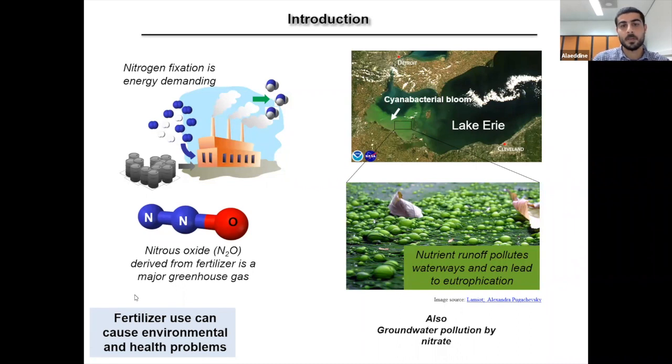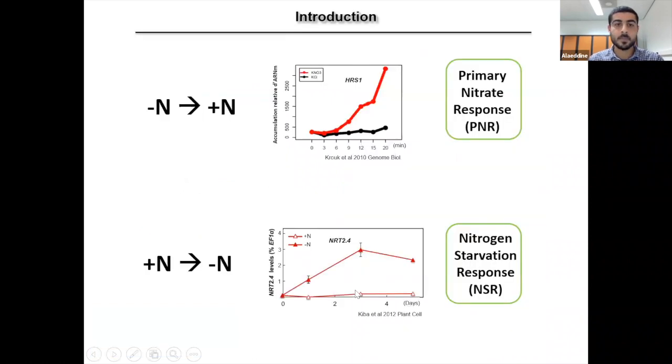On the other hand, the over-application of the fertilizer combined with the leaching property can lead to eutrophication of water resources and can also lead to groundwater pollution by nitrate. So in order to limit these environmental and health problems, we need to better understand the way plants behave toward the nitrogen availability.